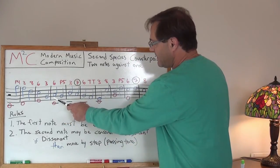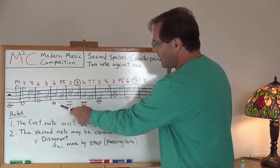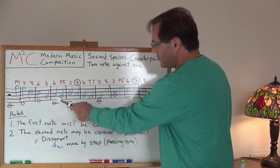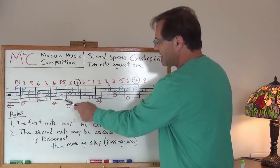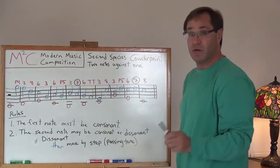In the next measure, I've got a C in my Cantus firmus and I take that against an A and that gives me a sixth. And then I decide to keep things consonant by creating a perfect fifth.